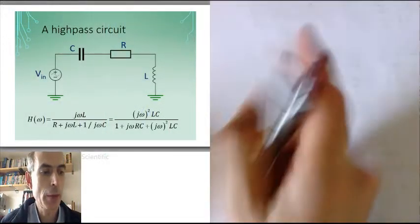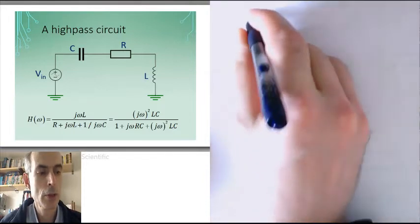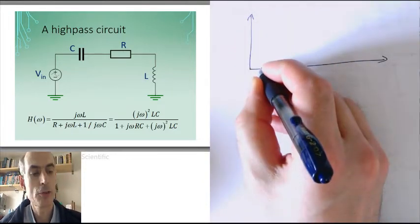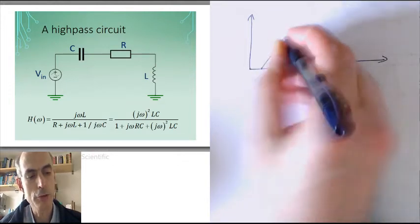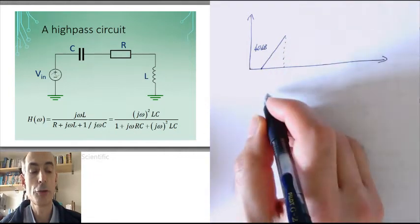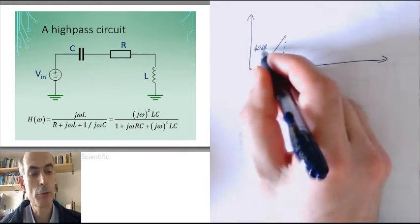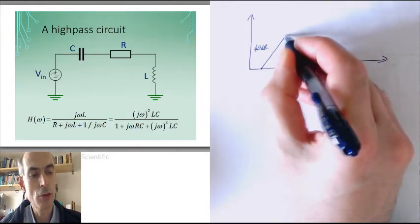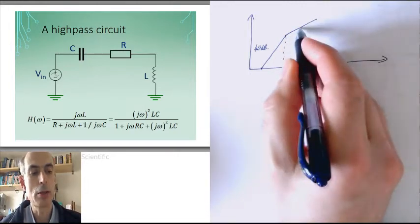So we would expect our frequency response to start off at very low frequencies, coming up at 40 dB per decade, until it gets to the break frequency of the first pole. So if we're going up at 40 dB and we arrive at a pole, we would then continue going up at 20 dB per decade.